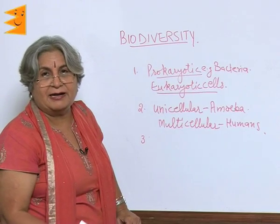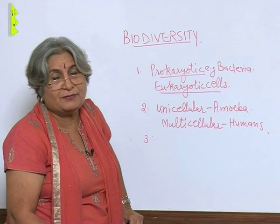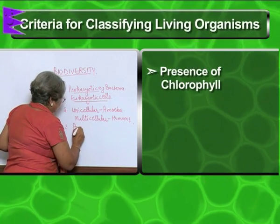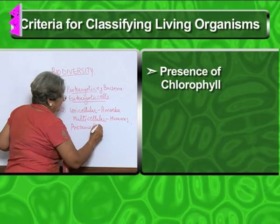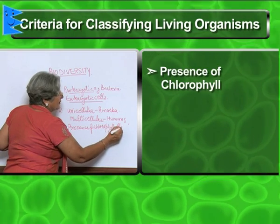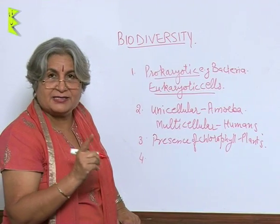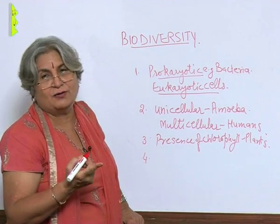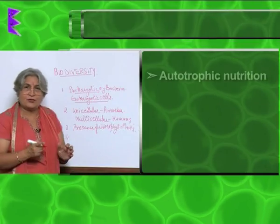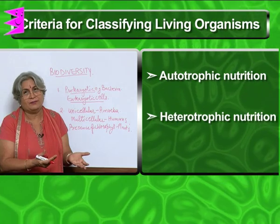Another very important criteria is: can the organism perform photosynthesis? And how will it perform photosynthesis — is there chlorophyll or not? The presence of chlorophyll. And if chlorophyll is there, is it performing photosynthesis? Or in other words, what is the nutrition — is it autotrophic or heterotrophic? Autotrophic would mean it can make its own food, while heterotrophic would mean it obtains food from other agencies.